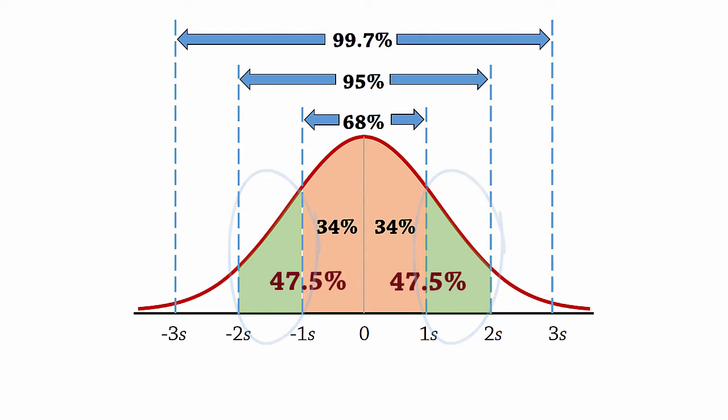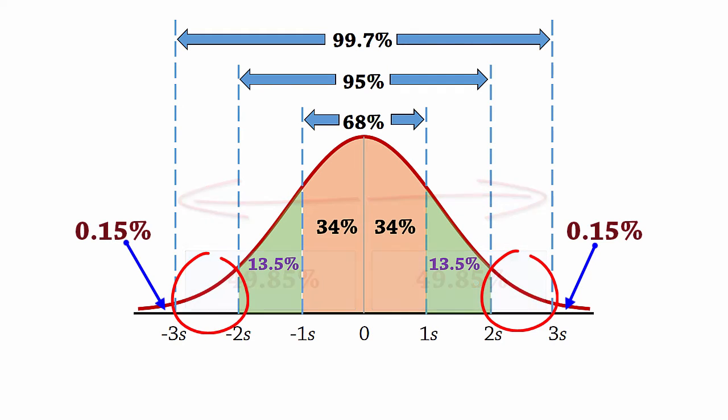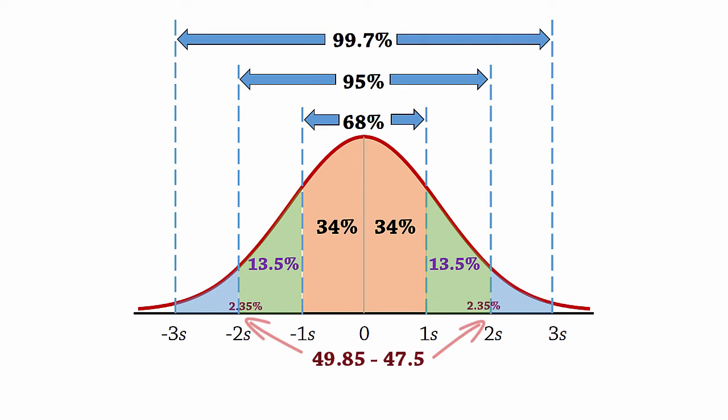34%, which gives 13.5%. Within three standard deviations, we have 99.7%, which when divided equally into 2 gives 49.85%, leaving us with 0.15% in the tails. The area here is 49.85% minus 47.5%, which gives 2.35%.